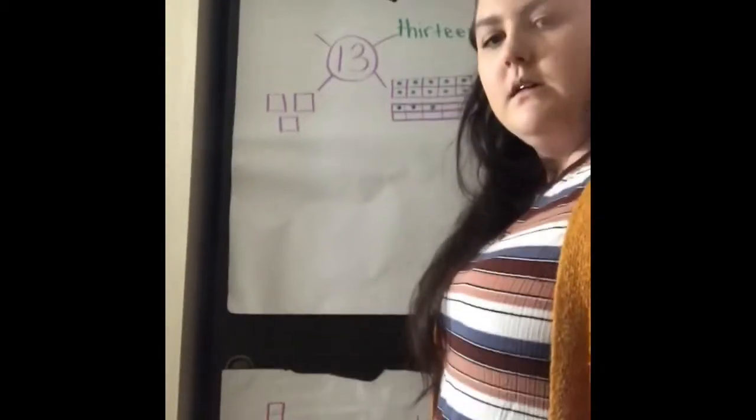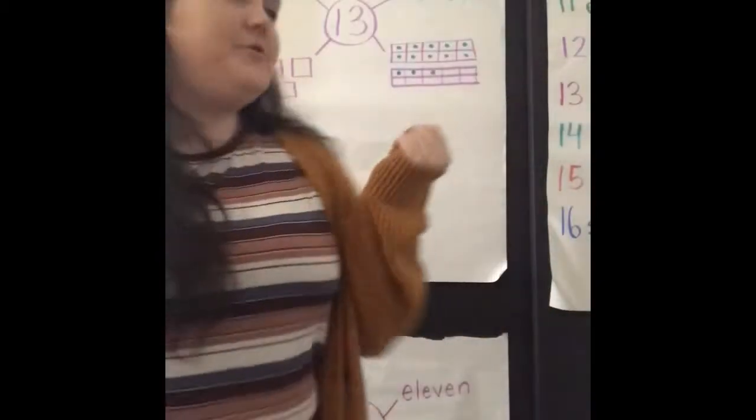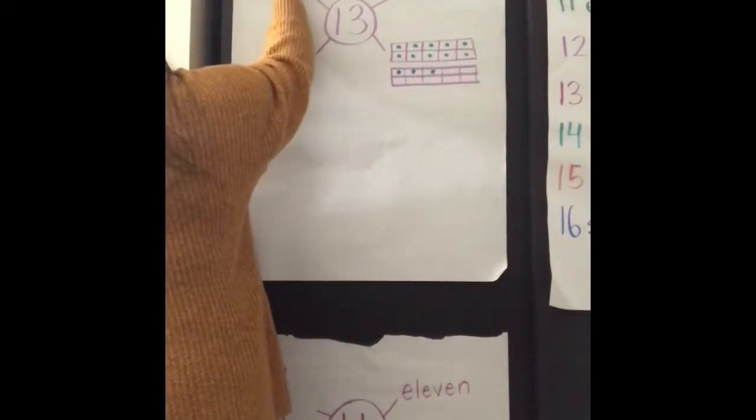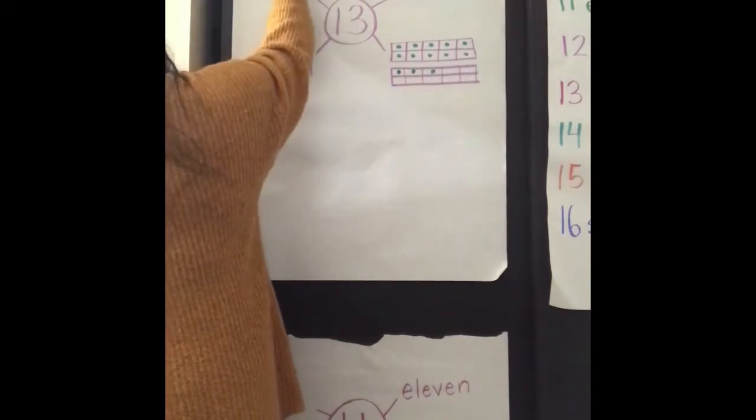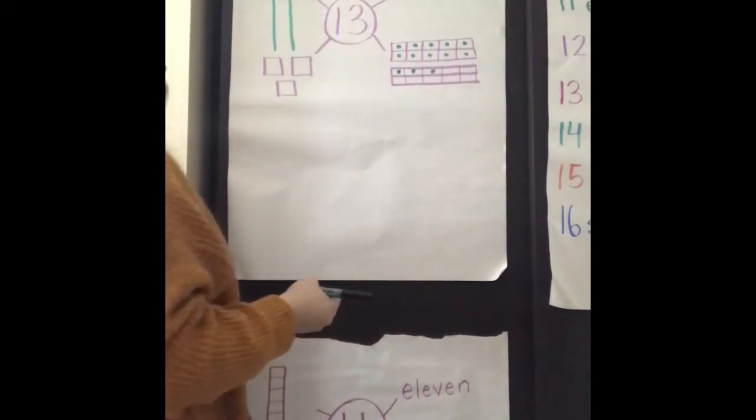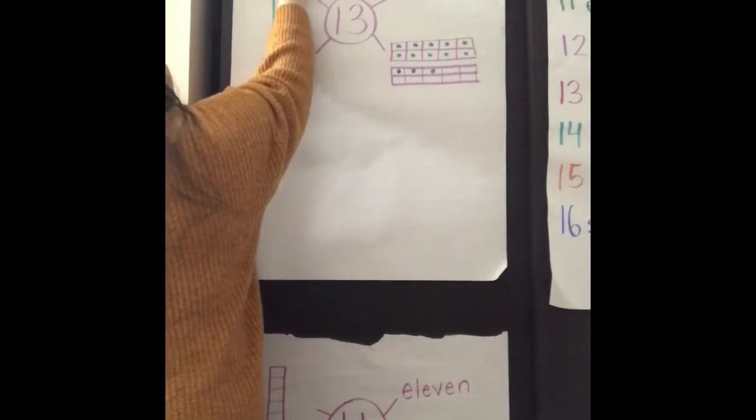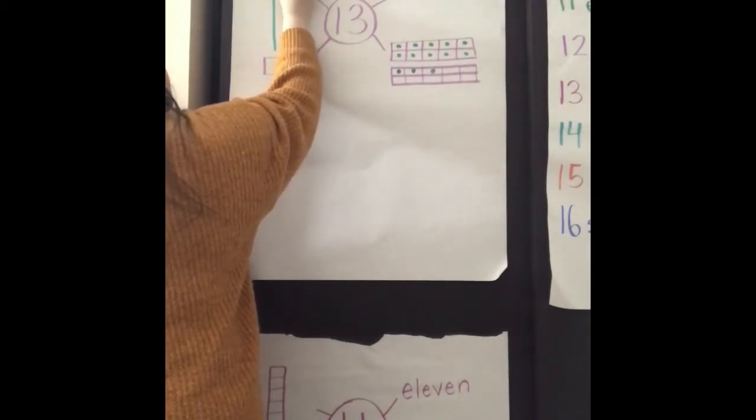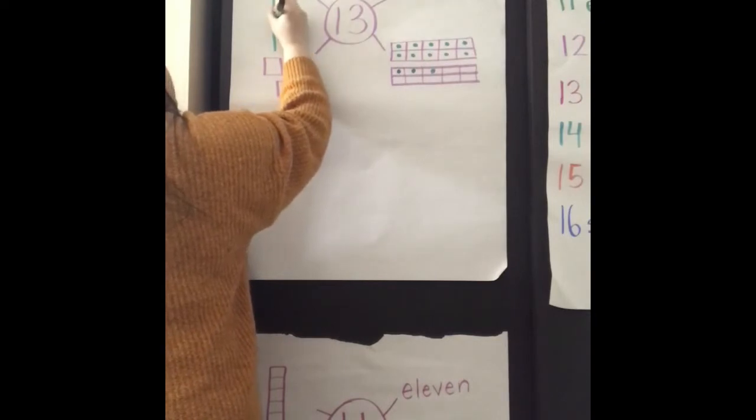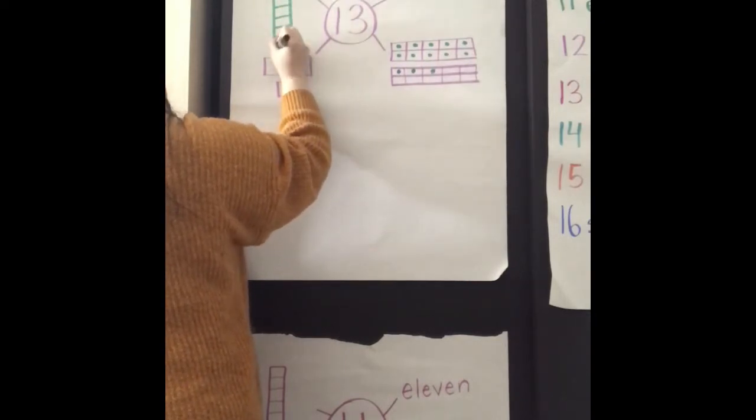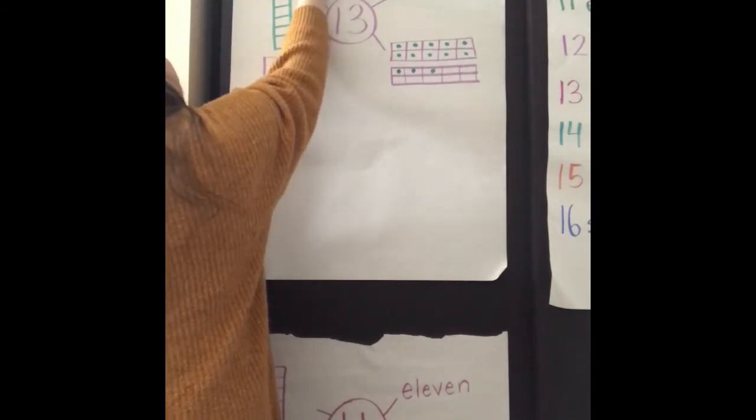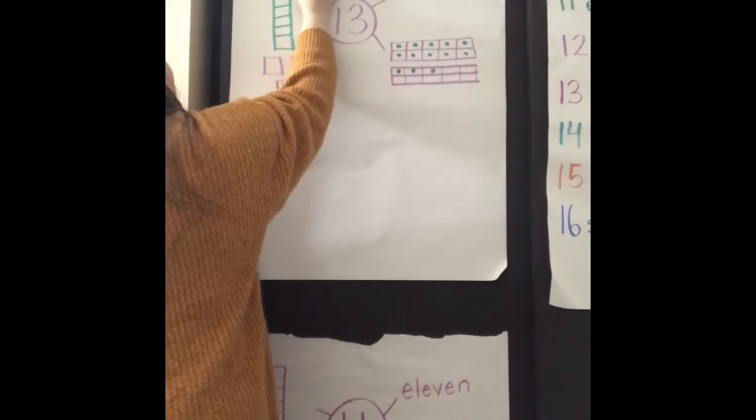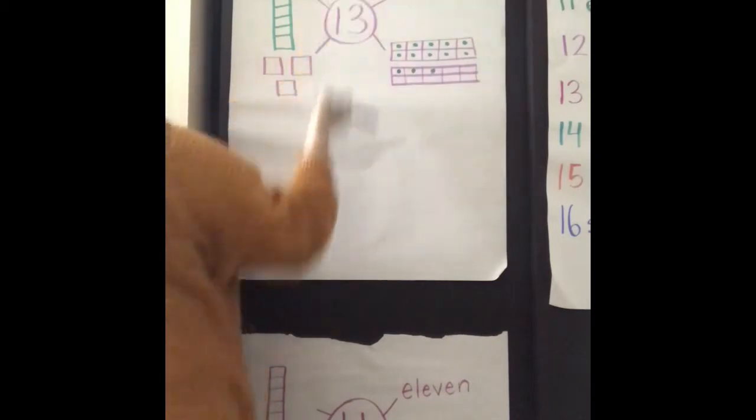Okay now I'm going to do my linking cube train and you're gonna count with me. I hope 13 will fit on this space. We'll see we're going to have to problem solve. Here we go. Ready? 1, 2, 3, 4, 5, 6, 7, 8, 9, 10, 11, 12, 13. It almost didn't fit but we got it.